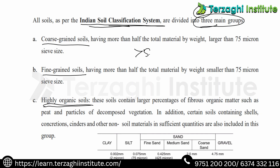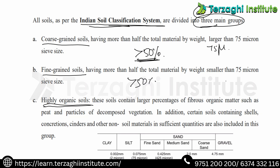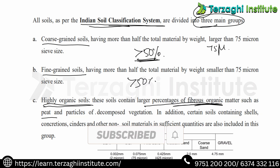Coarse-grained soils: greater than 50% by weight is retained on the 75 micron sieve. Fine-grained soils: greater than 50% by weight passes the 75 micron sieve. Highly organic soils contain a larger percentage of fibrous organic materials like peat, soil shells, concretions, cinders, and other non-soil materials.